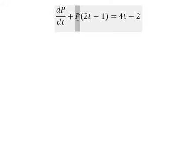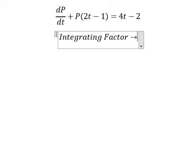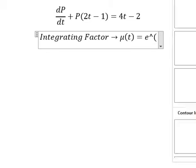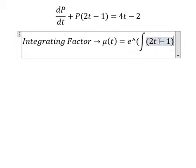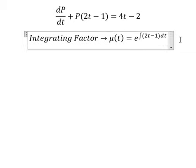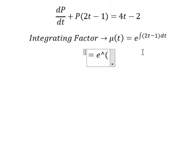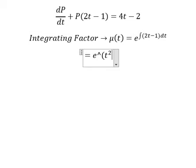Next, we have b and the first derivative of b. We can use integration. We need to find the integrating factor μ(t), which equals e to the power of the integral of 2t. From that integral we get t squared, and the integral of negative one gives us negative t.